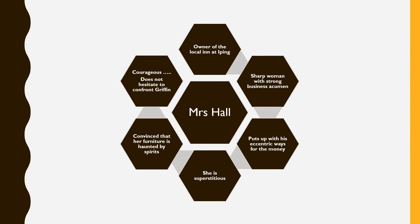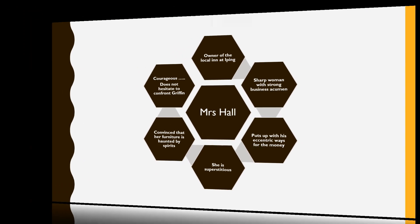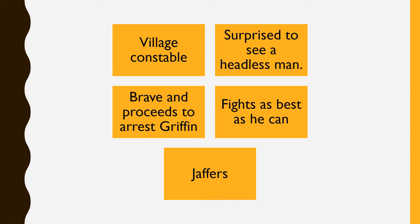Coming to the last character, Mr. Jaffers. He is the village constable who is sent forth to arrest Griffin. He is surprised when he arrives as he does not know how to arrest a headless man. But Mr. Jaffers is not the kind of man to digress from the path of duty. He is brave and proceeds to arrest Griffin with or without a head. He struggles with Griffin even though he cannot see him and fights as best as he can.